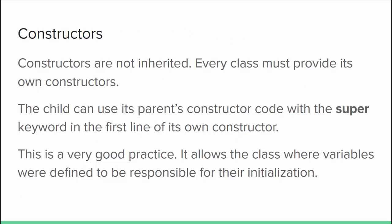When we say a child inherits everything from its parent, 'everything' doesn't quite mean everything — constructors are not inherited. Every class has to define its own constructors. However, we can access the parent's constructor using the `super` keyword. Super refers to an object's parent class in a similar way to how the `this` keyword refers to the current object itself. When a super constructor is called as the first line of a child constructor, the child class can let its parent constructor initialize any inherited variables, which is very good practice. The first statement of any child constructor should be a call to a super constructor.